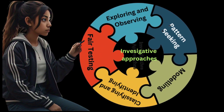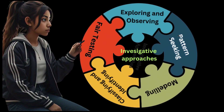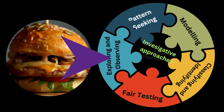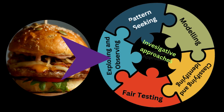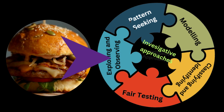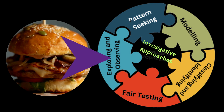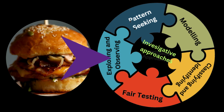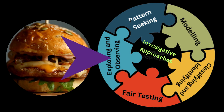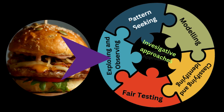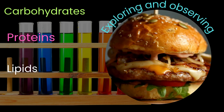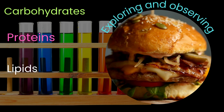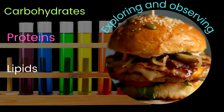So what type of investigation is this? This investigation is best described as exploring and observing, because we are not grouping different foods into types or categories. Instead, we're focusing on a single food item — a cheeseburger — and analyzing it to identify the types of nutrients it contains. By using chemical reagents, we're observing the presence or absence of specific nutrients like carbohydrates.